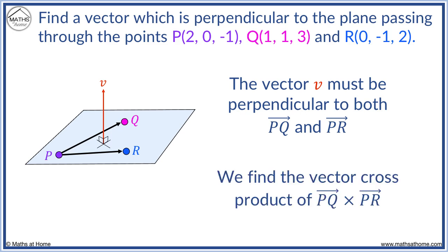To find such a vector, we need to find the vector cross product of PQ and PR.